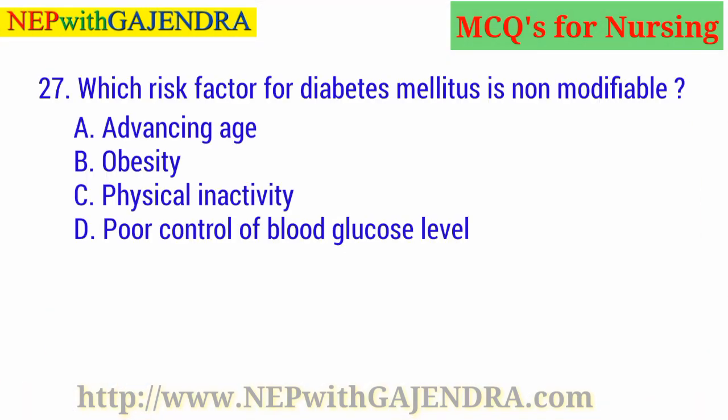Which risk factor for diabetes mellitus is non-modifiable? A. Advancing age. B. Obesity. C. Physical inactivity. D. Poor control of blood glucose level. The right answer is A: Advancing age.